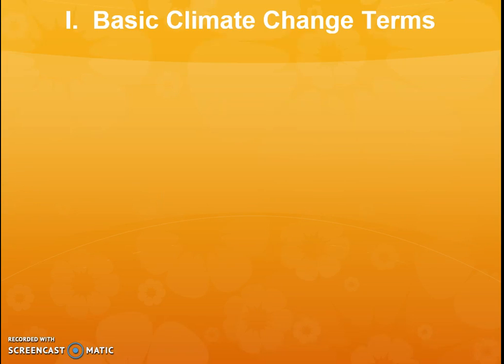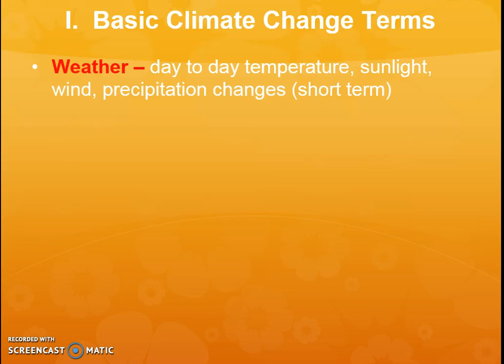When we talk about basic climate change terms, we have to make sure we're keeping these terms straight. First, we hear the word weather a lot — we hear it on a day-to-day basis because it's a day-to-day piece of information. Specifically, it refers to changes in temperature, sunlight, wind, and precipitation, and it's very short term. The weatherman or weather lady gives us short-term daily and weekly information.